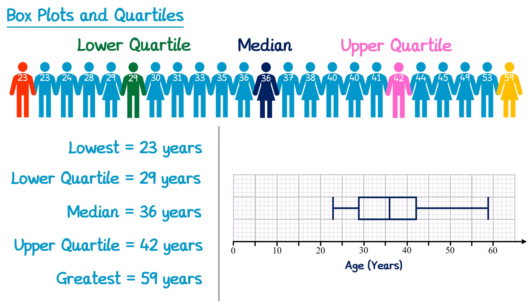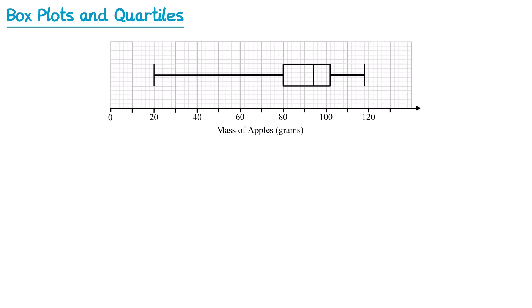Box plots are a nice way of visualising sets of data. Sometimes in an exam you'll be given a box plot and asked some questions about it. For instance, this box plot is about the mass of some apples and we could be asked to write down the median mass. The median mass is the line in the middle of the box — that's this one here. We just read off where that value is on the scale. Going down, you can see that this is at 94, so the median mass is 94g.